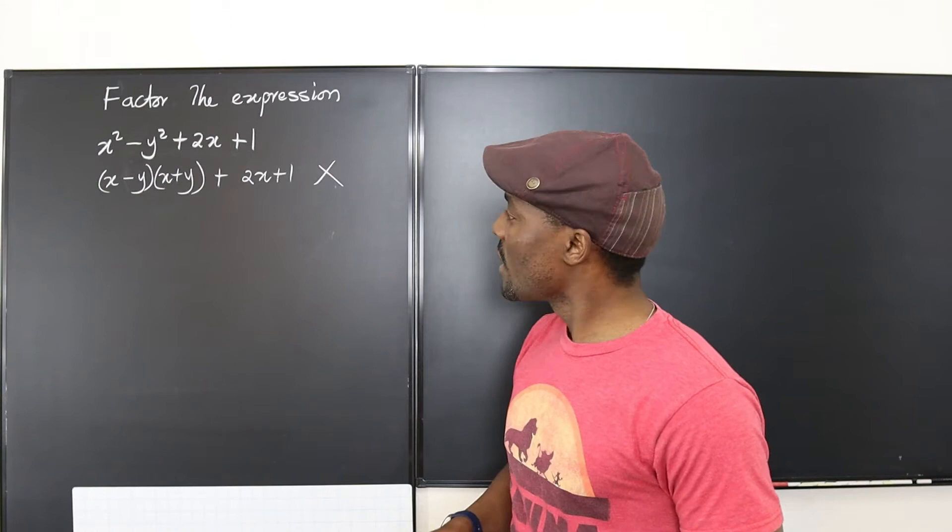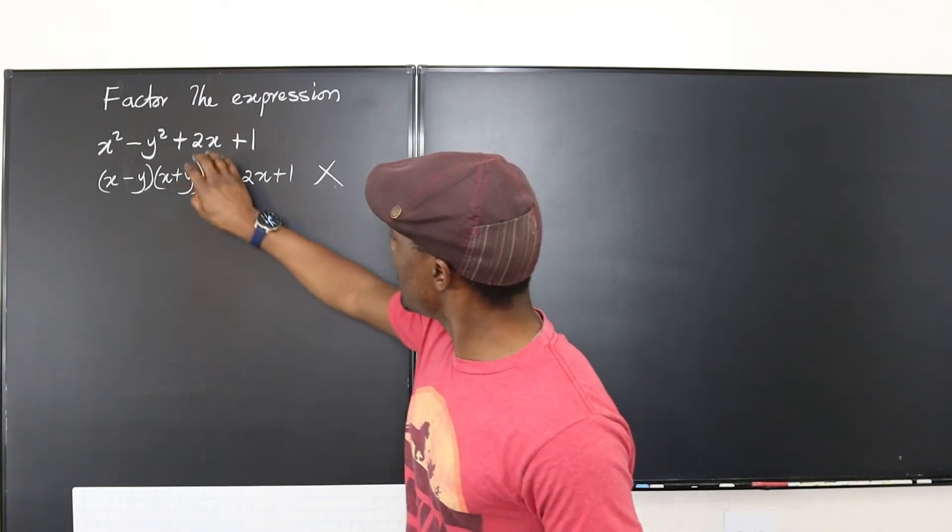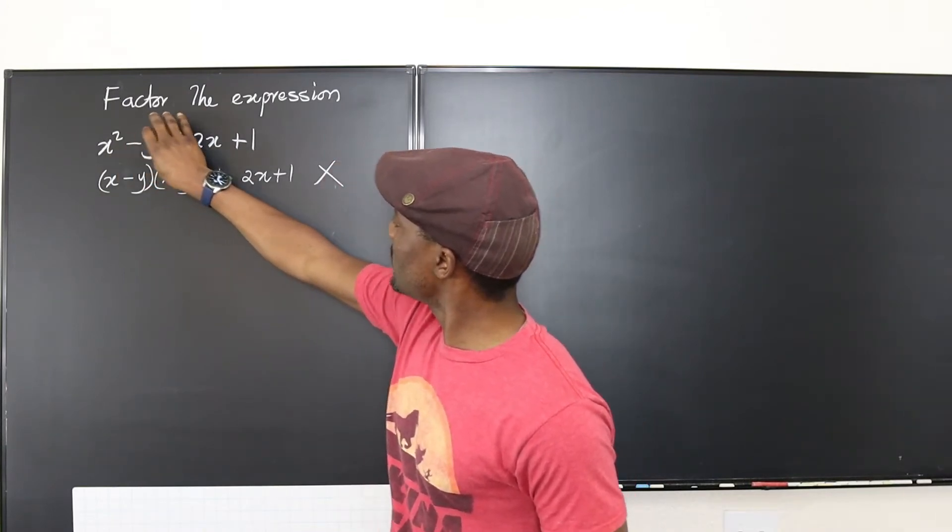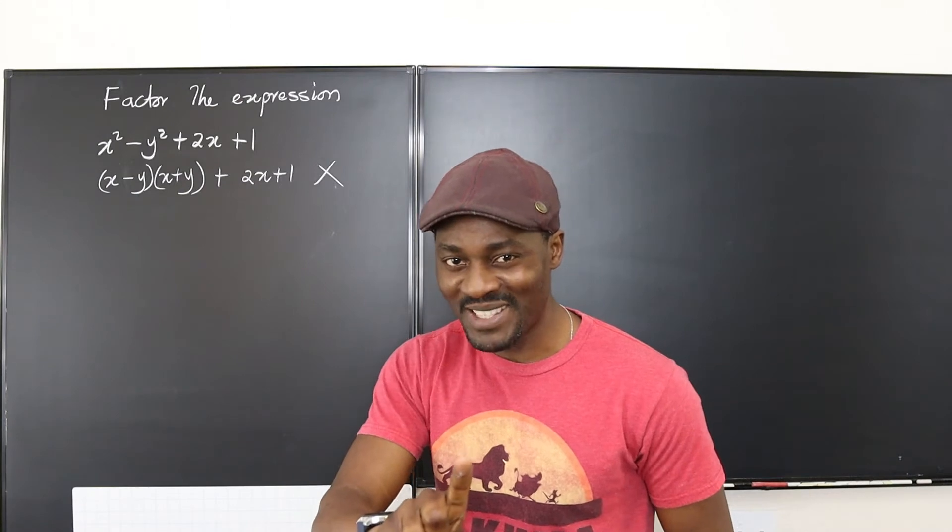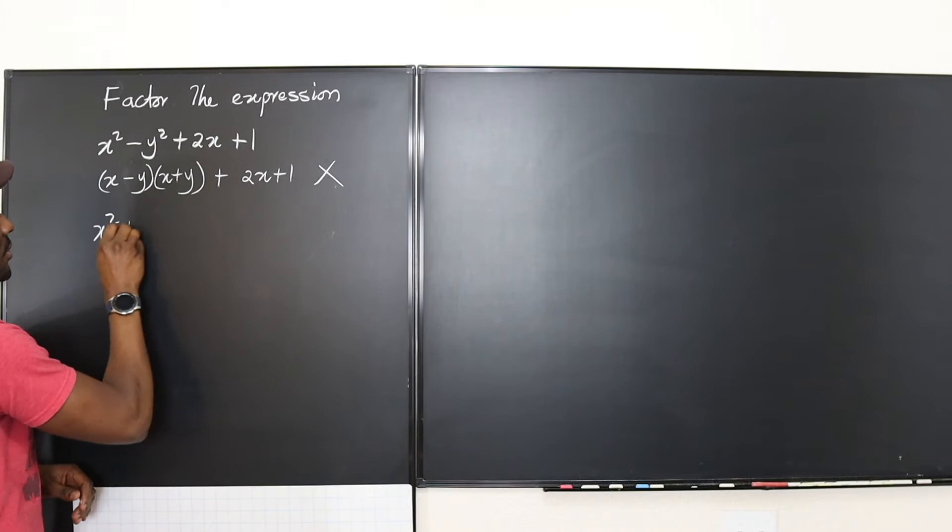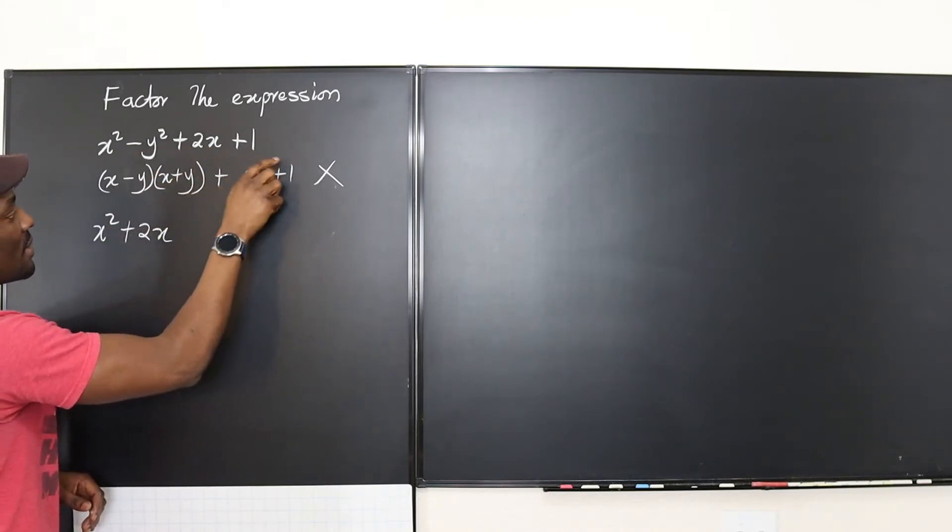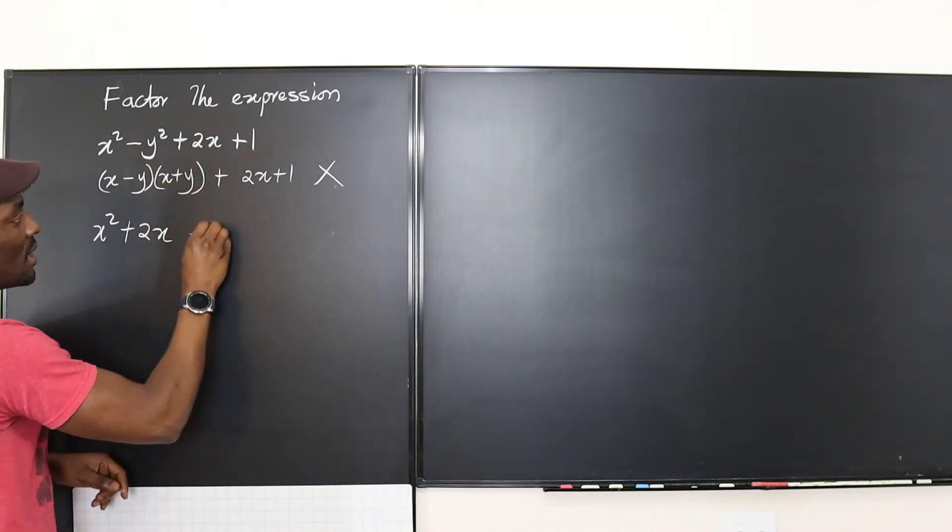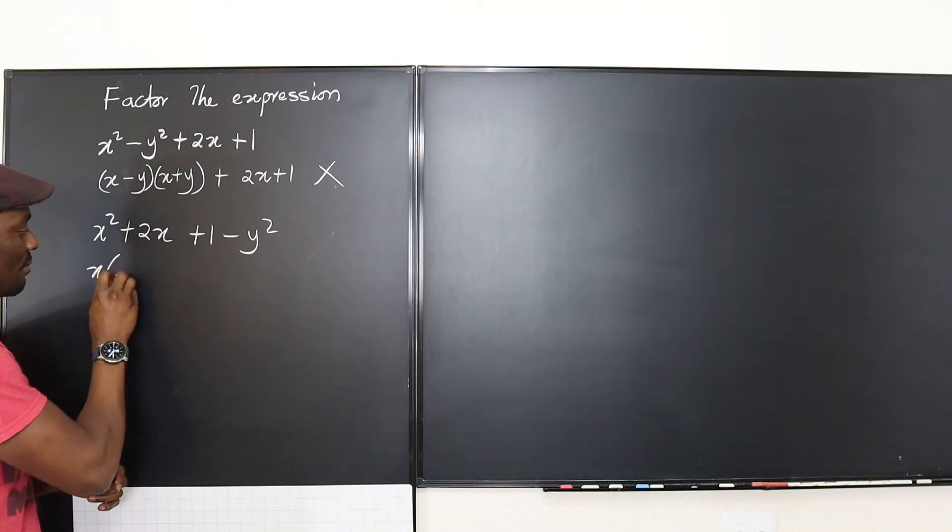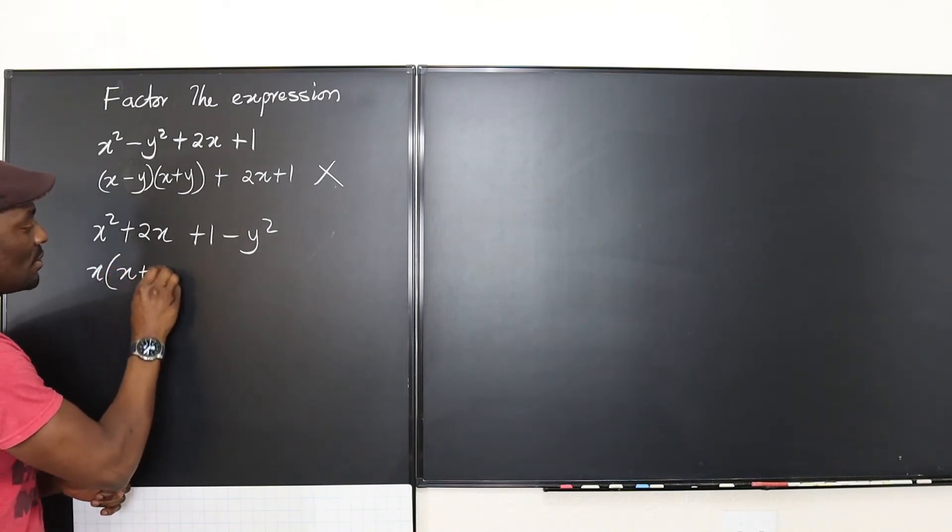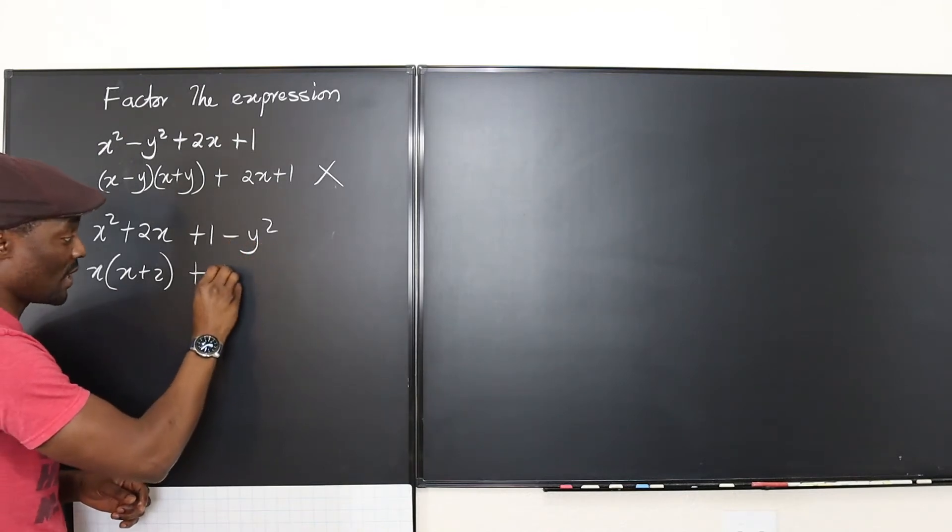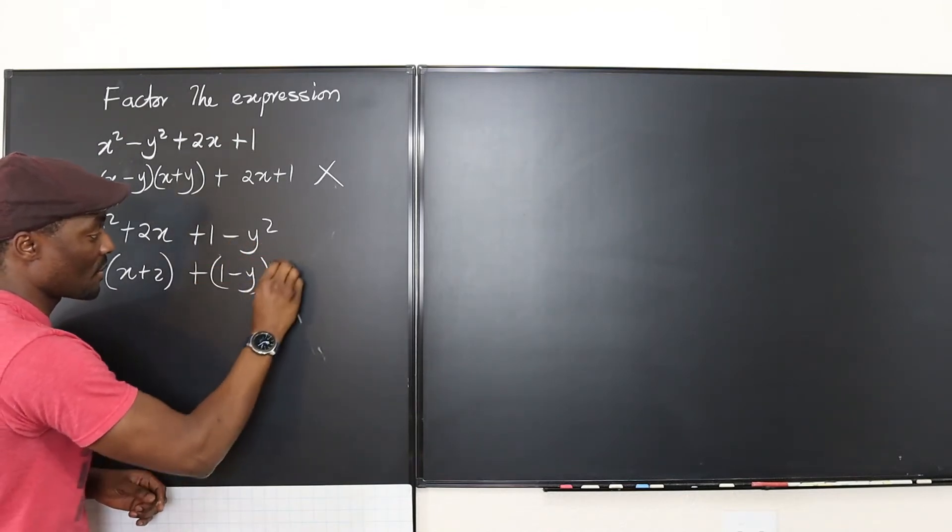What if we put x² and 2x together and put y² and 1 together? Maybe that might be the secret. So we're gonna say x² + 2x, then we have plus 1 minus y². So here I can factor x out and I'm gonna have x(x + 2), then I'm gonna have plus—this is difference of two squares—so that's (1 - y)(1 + y).